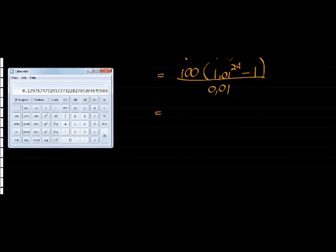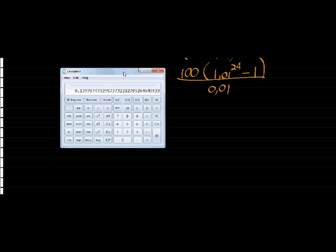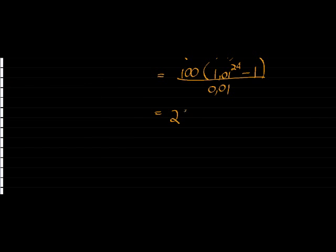So, let's use our calculator to calculate that. I'm going to type it in exactly as it appears. So, I've got 100 that is multiplied. Inside the bracket, 1.01 with an exponent of 24 minus 1. Close the bracket. Divided by 0.01. And we get that this investment will be worth 2,697.35 cents. That is how much this investment will be worth.